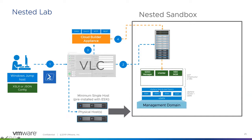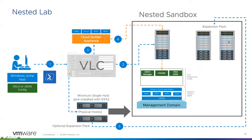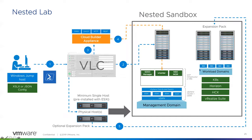The VMware Cloud Foundation Lab Constructor has a big button called the expansion pack, which allows us to build more nested ESXi hosts so you can deploy additional workload domains. On those workload domains, you can deploy vSphere with Kubernetes, Horizon, HCX, the vRealize suite — whatever you want to deploy within your lab environment. To get this done, the expansion pack involves three different files. First, we need DNS entries: those DNS entries are stored in the Cloud Builder appliance. Before you deploy your entire lab, if you want to add more ESXi hosts, you need to open up the DNS entries file.